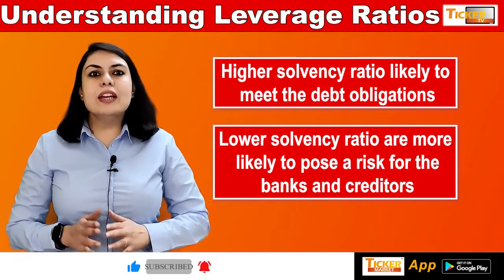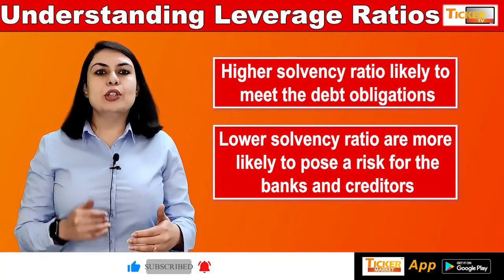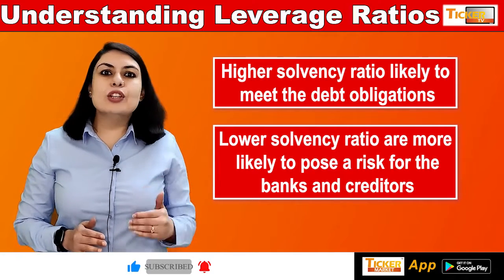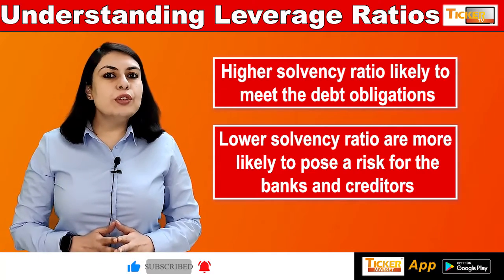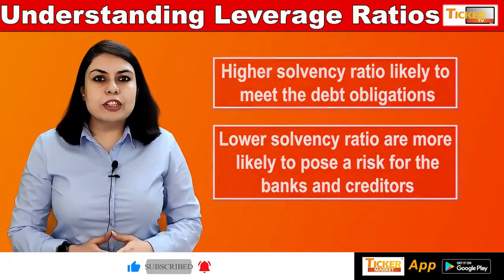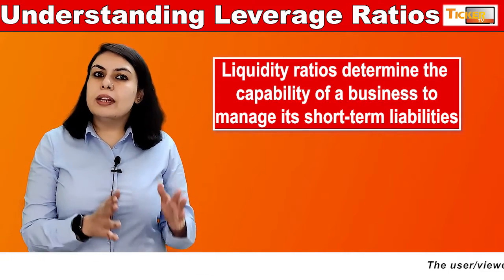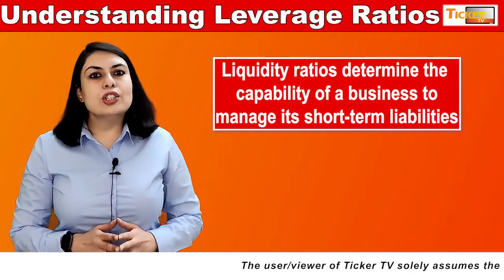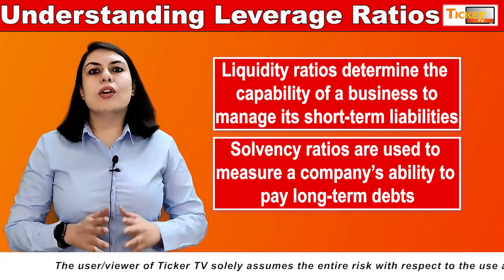If a company has a low solvency ratio it is more at risk of not being able to fulfill its debt obligation and is likely to default on the debt repayment. Solvency ratios should not be confused with liquidity ratios — both are totally different. Liquidity ratios determine the capability of a business to manage its short-term liabilities, while solvency ratios are used to measure a company's ability to pay long-term debts.